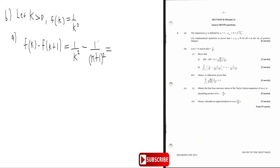If you expand the denominator for that side, you're going to get one over k squared minus one over k plus one squared. When you expand that, you get first term squared plus twice the product of the two, which is plus two k, plus second term squared, which is plus one. So now we have k squared and k squared plus two k plus one.